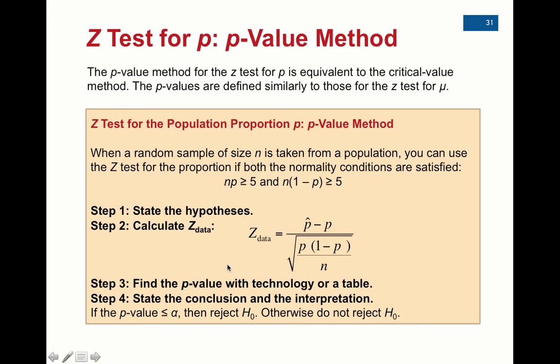If you don't like that, then you can compute z-data using the formula and find the p-value, which is going to be from z-data to E99 if it's a right tail test, from negative E99 to z-data if it's a left tail. And then depending on what side z-data is on—positive or negative—you take that to the corresponding E99 and multiply by two for two tails. That gives you the p-value. Remember, if the p-value is less than alpha, you reject the null. If it's greater than alpha, you do not reject the null.